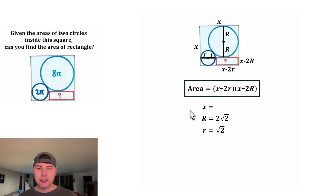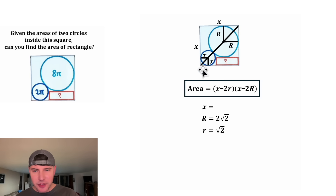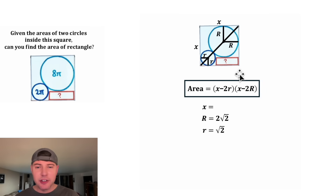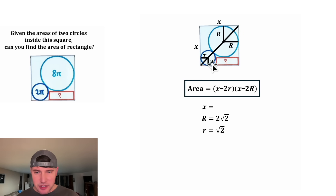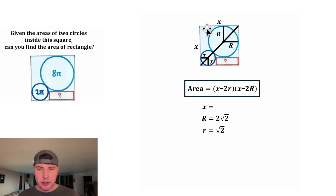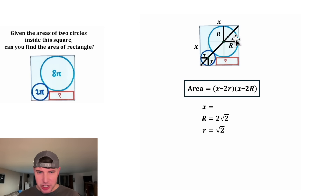Now all we've got to do is solve for X. Let's construct the diagonal of this square — it's going to go exactly through the centers of both of those circles. We know that because this is a square with a base and height of big R, and this is a square with a base and height of little r. So the diagonal of the large square is shared with the diagonals of these other squares.